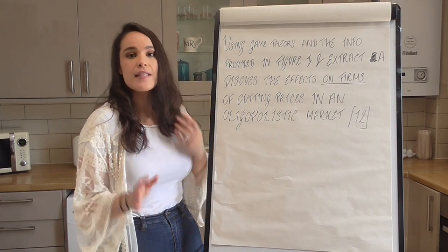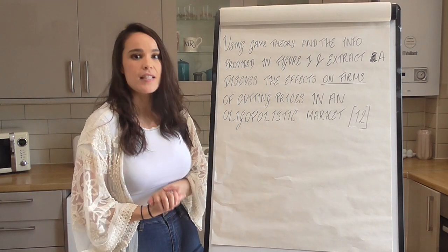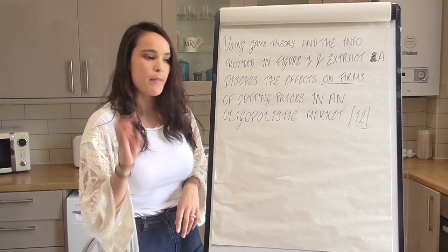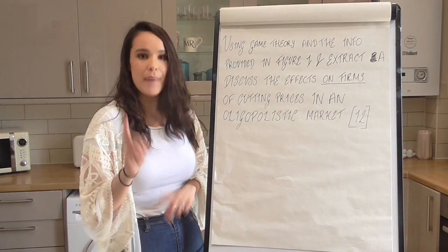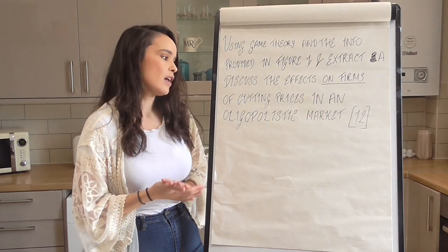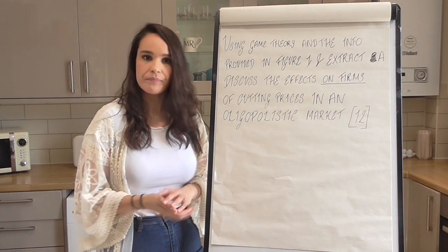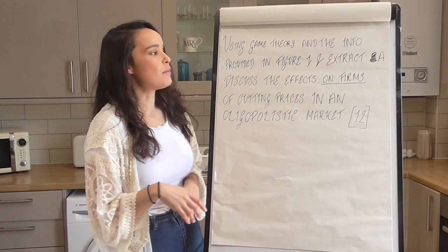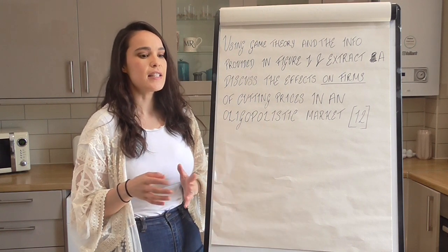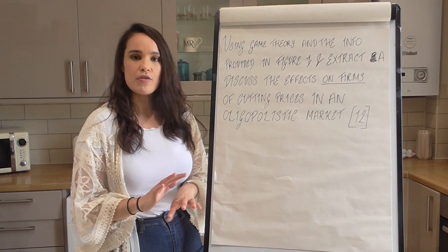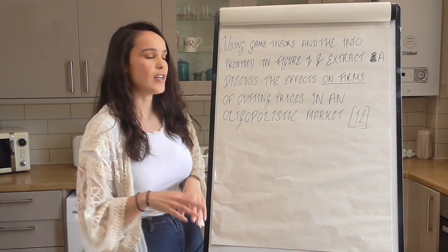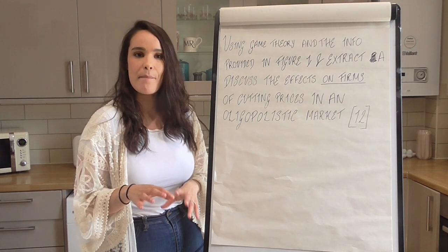This is the 2019 Paper 3 A-level paper - Paper 3 micro and macro - and it is Section A Question C, the 12-mark question. When looking at Figure 1 and Extract A, Figure 1 is the breakdown of the market structure of crisps and Extract A is looking at the advertising ban.